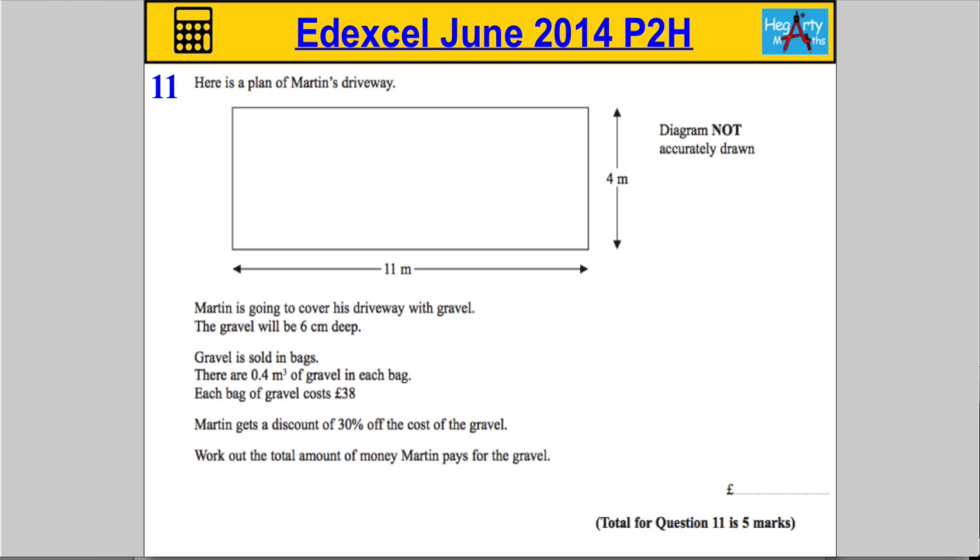Question 11 says here is the plan of Martin's driveway, and we have this rectangular object which is 11 by 4. He's going to cover his driveway with gravel. The gravel is six centimeters deep. Gravel is sold in bags, there are 0.4 meters cubed of gravel in each bag, and each bag costs 38 pounds. Martin gets a discount of 30% off the cost of the gravel. Work out how much he's going to pay.